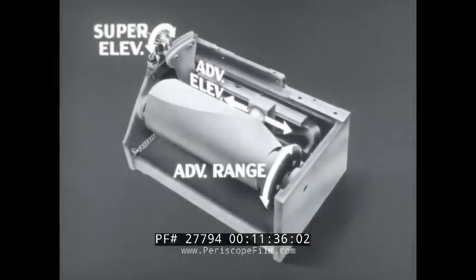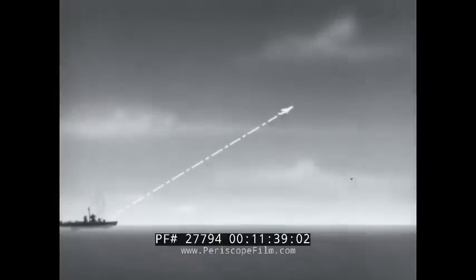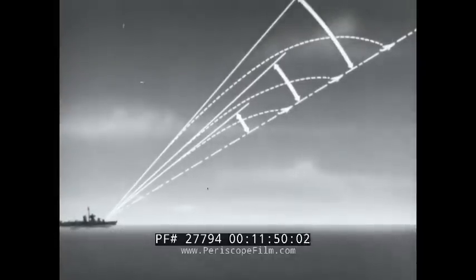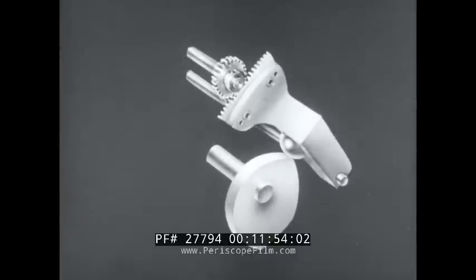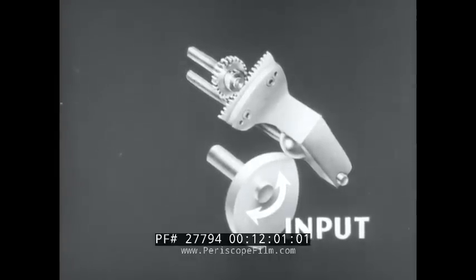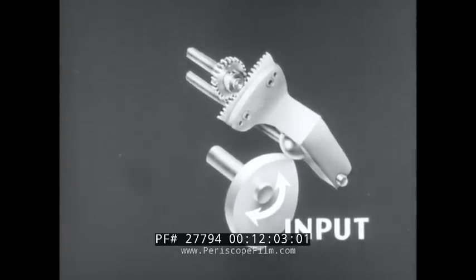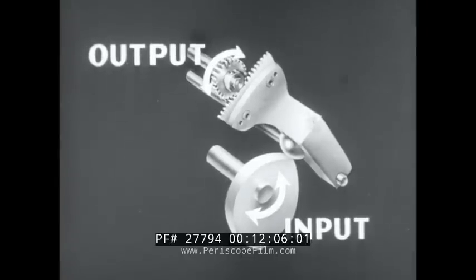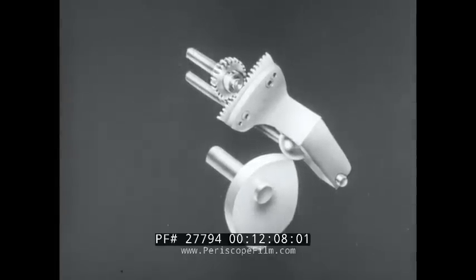The mechanism can be understood if you first consider the superelevation problem at one elevation only. There can be any number of ranges, and each range requires a different superelevation. In a cam cut for one elevation only, an input would position the cam for advance range, and the working surface would produce the corresponding superelevation output. But this cam is for one elevation only.